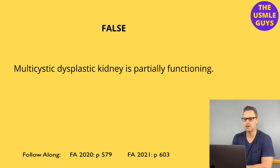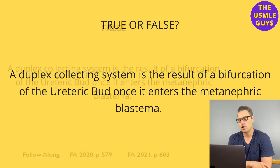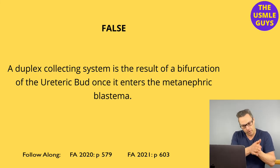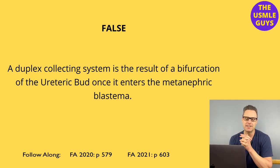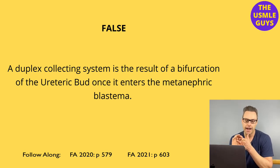Let's move on to the next question — this is false. The bifurcation of the ureteric bud actually happens before it enters the metanephric blastema, not after. This is associated with an increased risk of UTIs, ureteral obstruction, vesicoureteral reflux, and hydronephrosis.